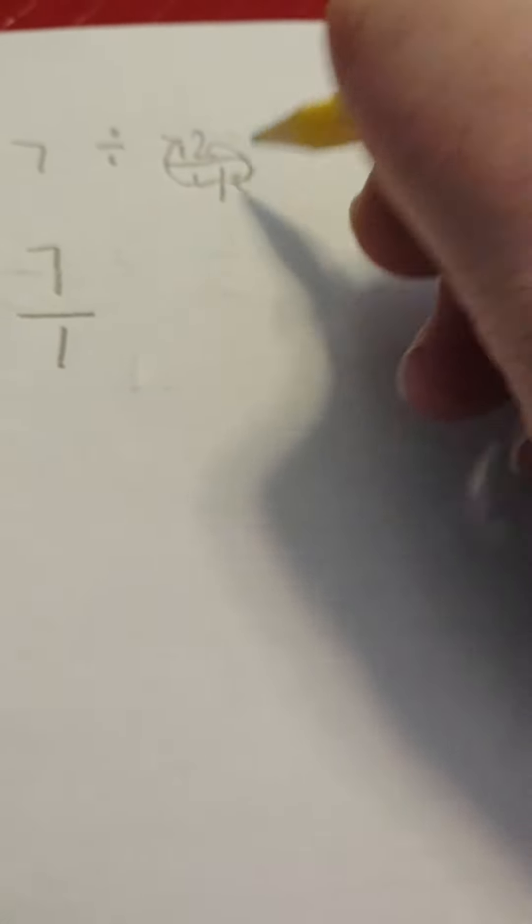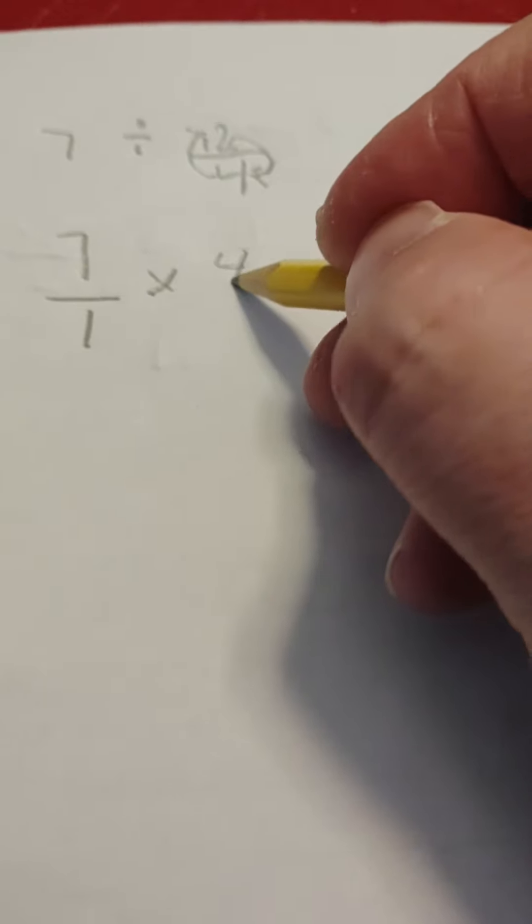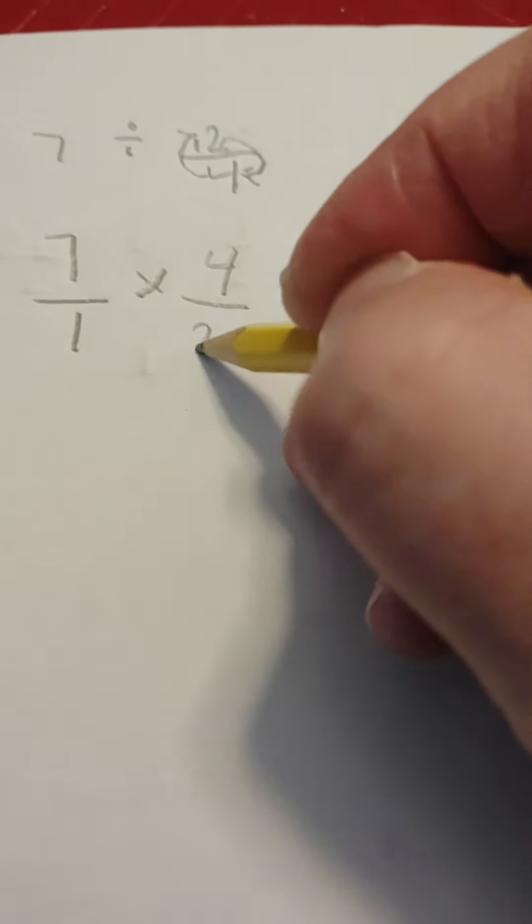The four goes on top, the two comes on bottom, okay, and we multiply it. So it's a multiplying this.